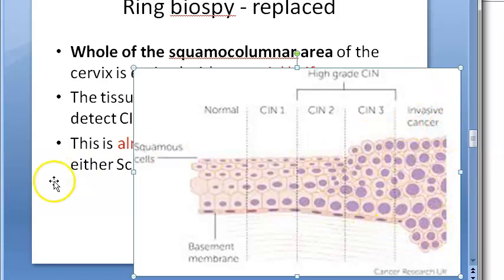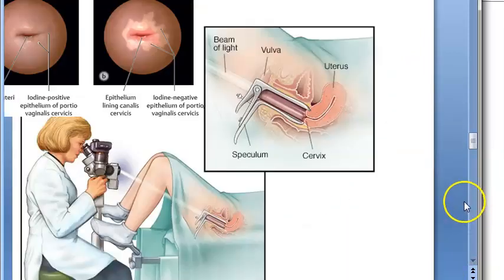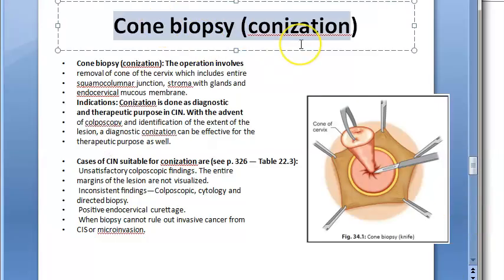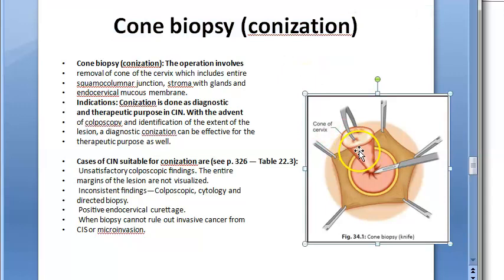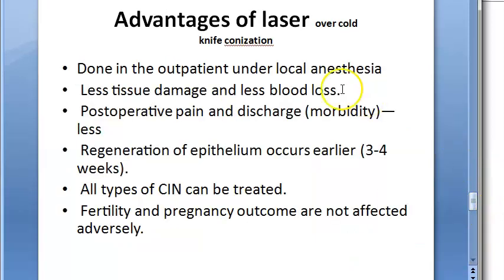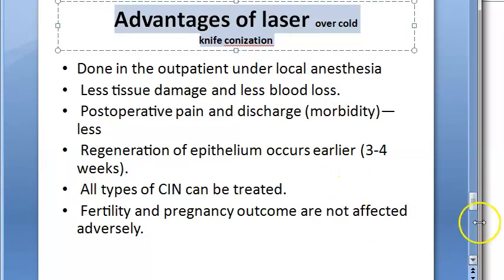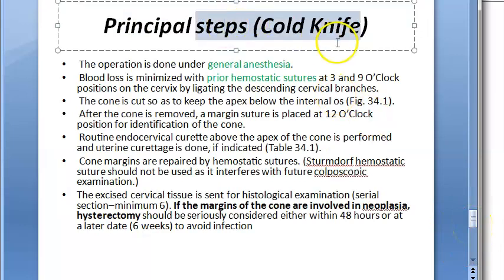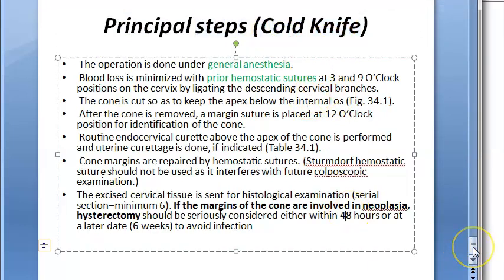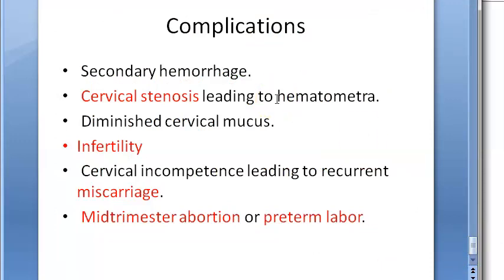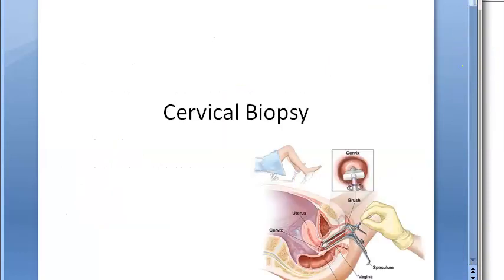Invasive carcinoma is very serious. Cone biopsy (conization) is important - using a cold knife or CO2 laser, with laser being preferred. The stages go from normal through CIN 1, CIN 2, CIN 3, then invasive. Complications include hemorrhage, hematometra, infertility, diminished cervical mucus, miscarriage, abortion, and preterm labor. That covers cervical biopsy.